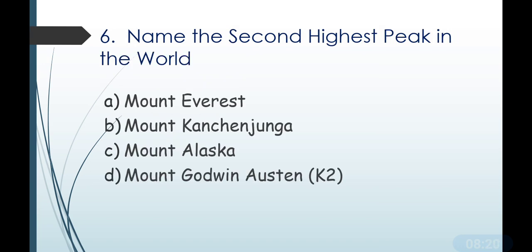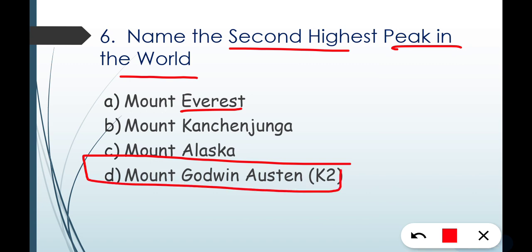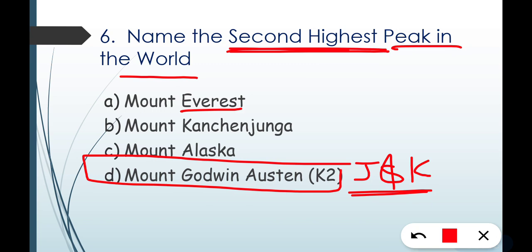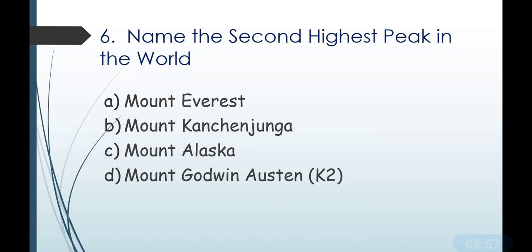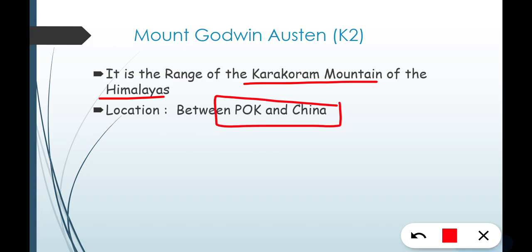Next: name the second highest peak in the world. The first highest peak is Mount Everest at 8,848 meters. The second highest peak is Godwin Austin, that is K2, in the Karakoram range. K2 is located at the border of Pakistan-administered Kashmir and China.